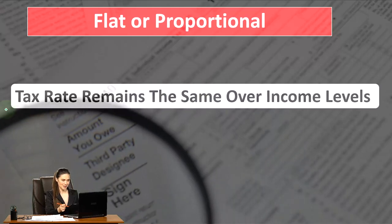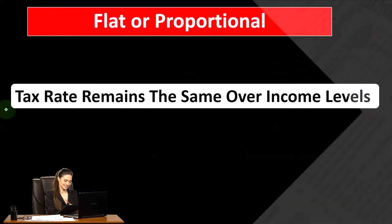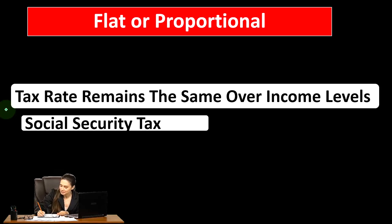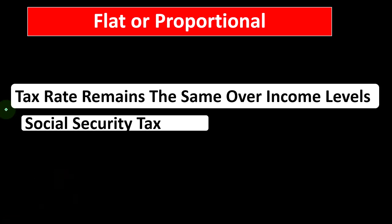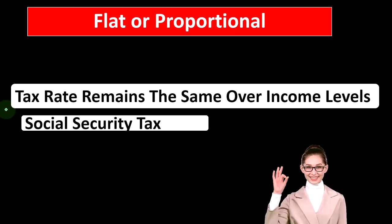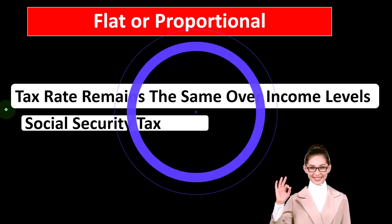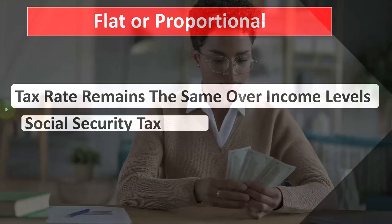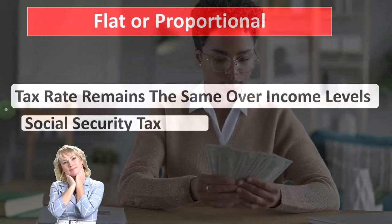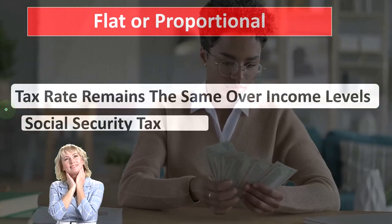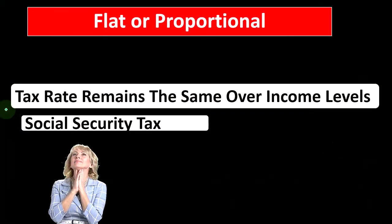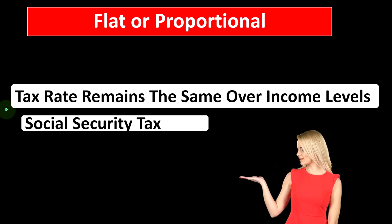A flat or proportional tax means the tax rate remains the same across income levels. Social security, for example, can be thought of as a flat type of tax. If you apply a flat tax to an income tax system, everyone is taxed at the same rate — say 10% or 15%. If you earn $100,000, you'll pay more in absolute dollars, but the rate doesn't change compared to someone earning $10,000.